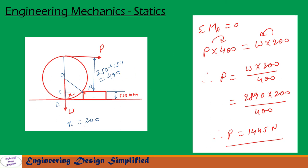Now let us take moments about A. So moments about A: P into 400, that is a clockwise moment, equal to W into X, that is 200 millimeter, that is counterclockwise. So both are equal. So from this we get P equal to W into 200 by 400. After simplification we get P equal to 1445 newtons.